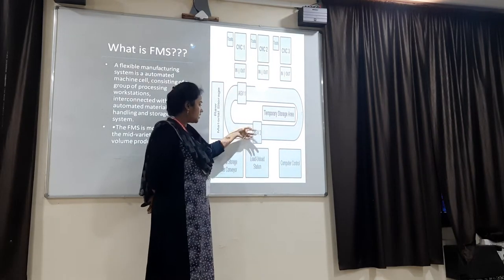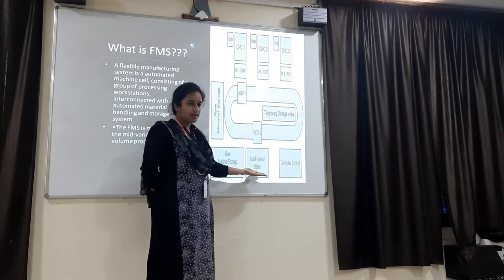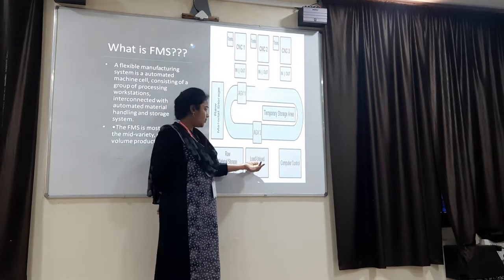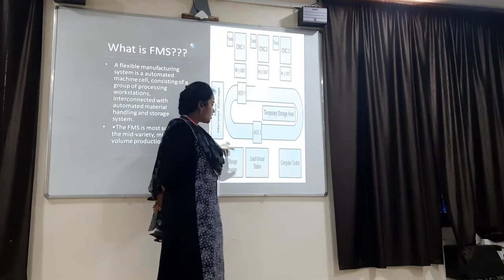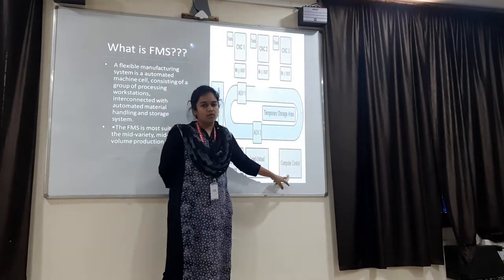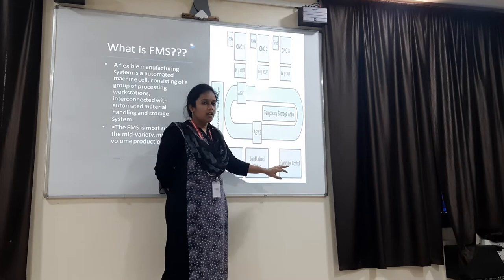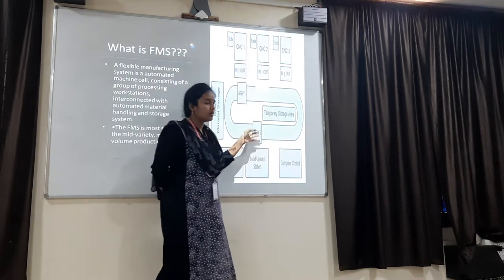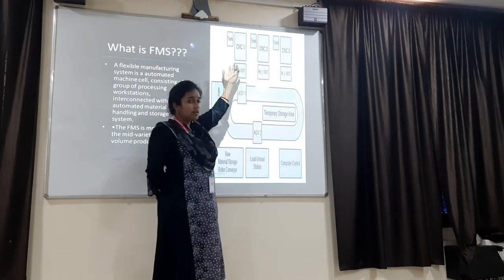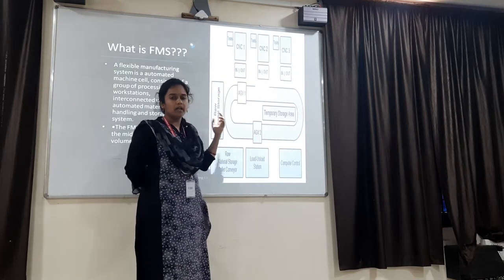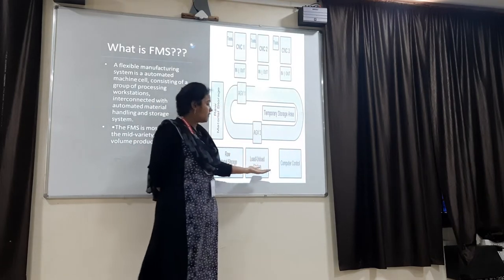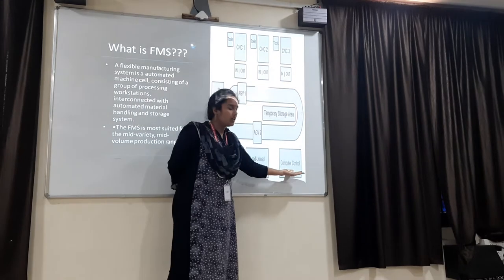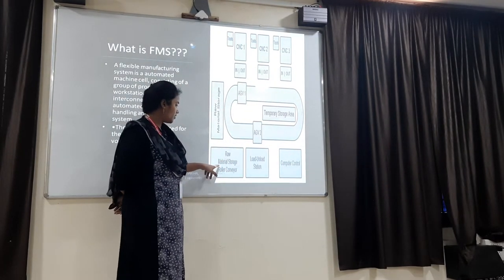At one point loading will be done, and at the same point, after finishing the machine operation, the unloading of that particular job will be done. Everything will be controlled by a computer control system. All the input and output — loading and unloading, the AGV moving over the conveyor, and the working of CNC machines with their tools — everything is operated by a single computer control system.